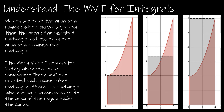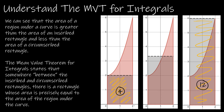If we were to estimate the area of this figure — the area under the curve shaded in red — we've already talked about using the left-hand or right-hand endpoint. Using one rectangle, I can use the inscribed rectangle, giving an area of 2 times 2, which is 4. Or I can use the circumscribed rectangle using the right-hand endpoint, giving 2 times 6, which is 12. The mean value theorem for integrals says the actual area equals some rectangle.